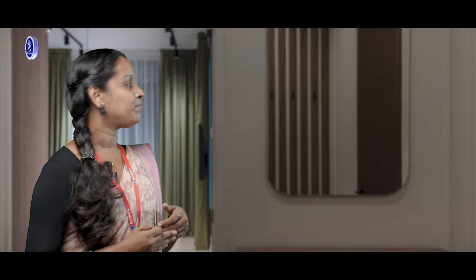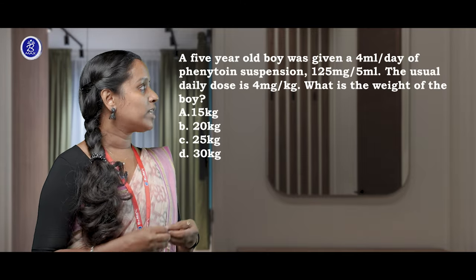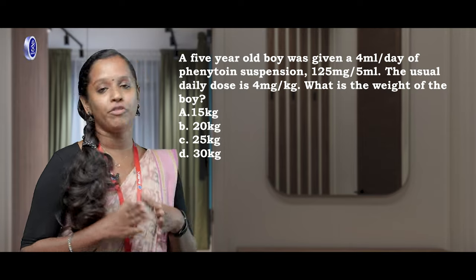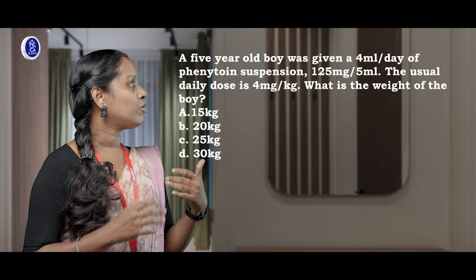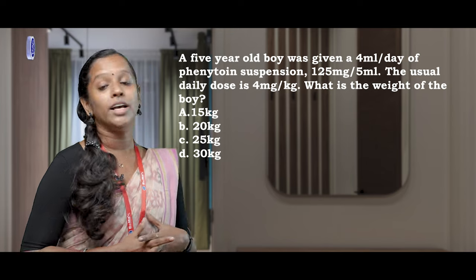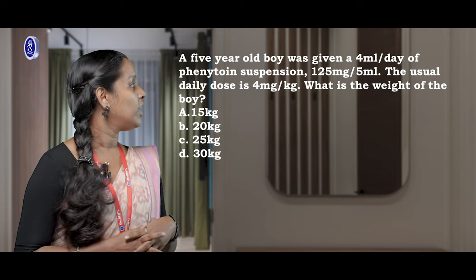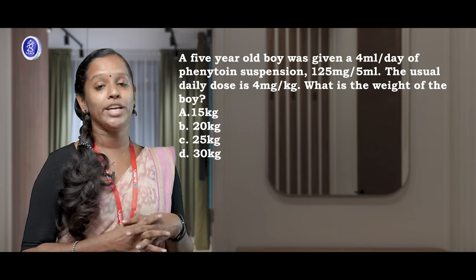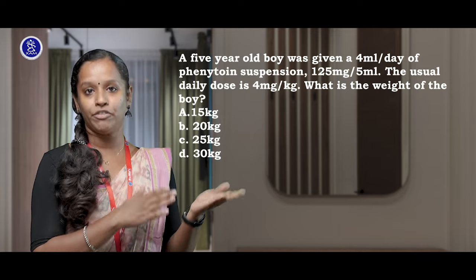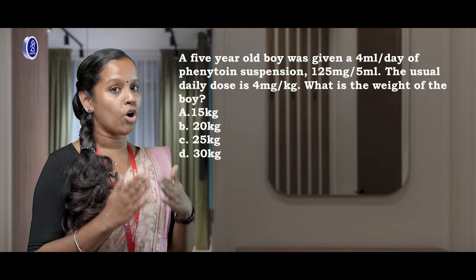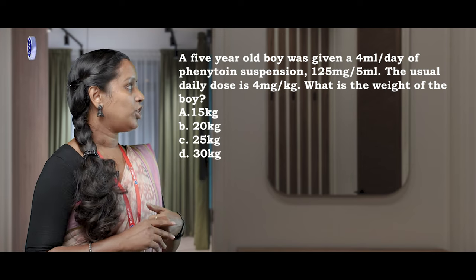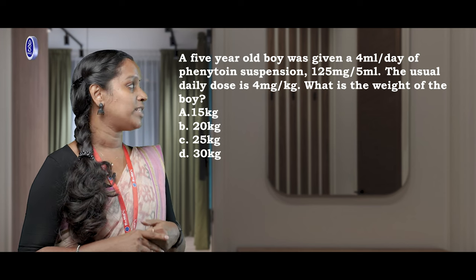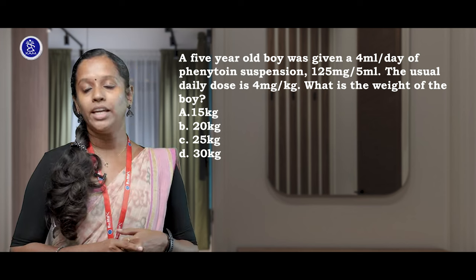Let's see the third question. A five-year-old boy was given 4 ml per day of phenytoin suspension. The phenytoin suspension contains 125 mg per 5 ml. The usual daily dose is 4 mg per kilogram. What is the weight of the boy? The options are: option A is 15 kg, option B is 20 kg, option C is 25 kg, and option D is 30 kg.